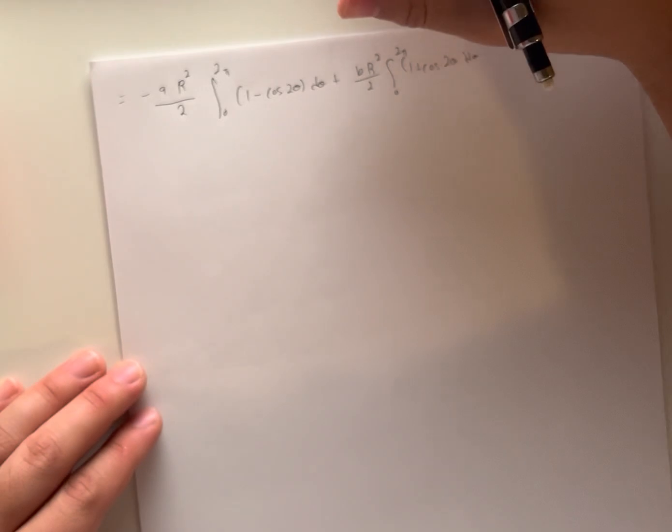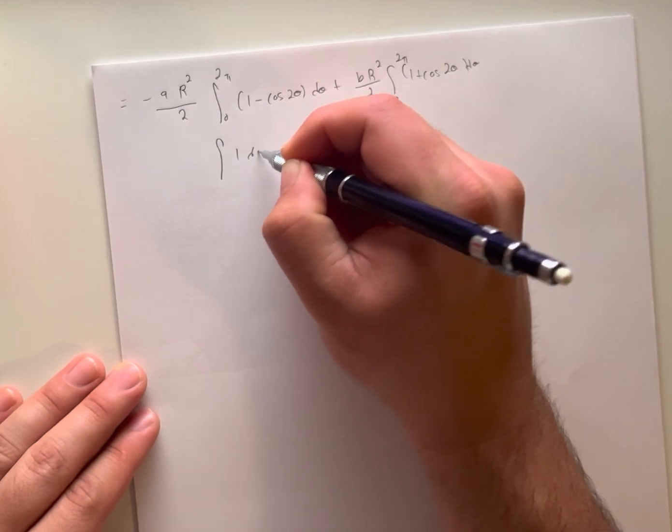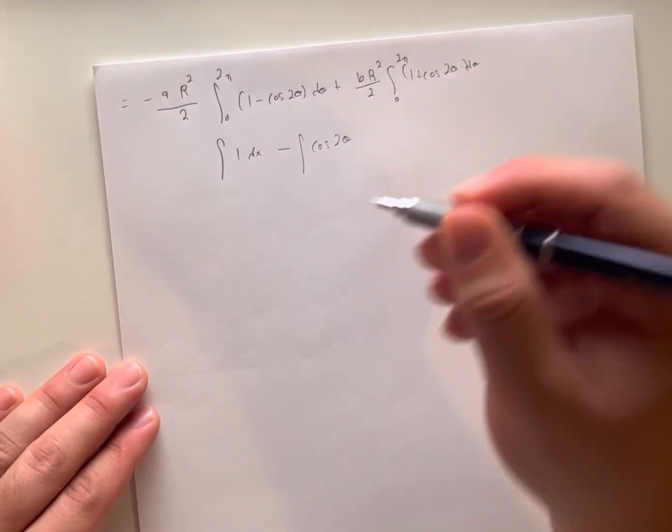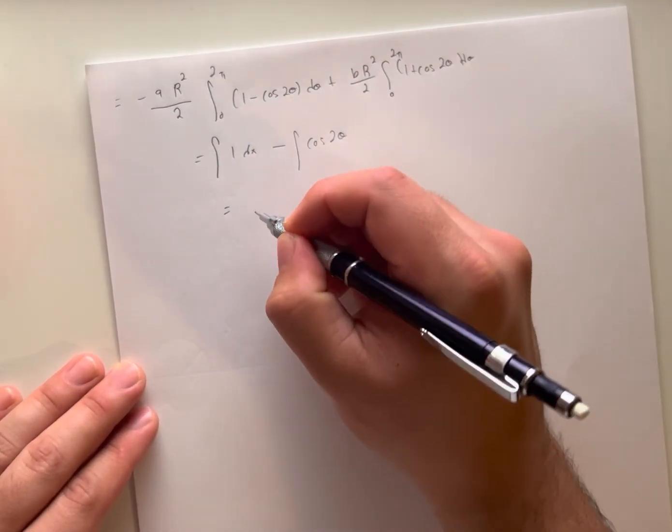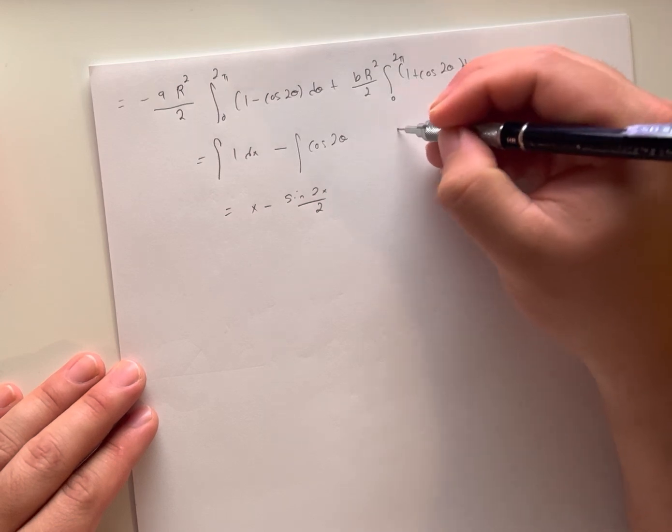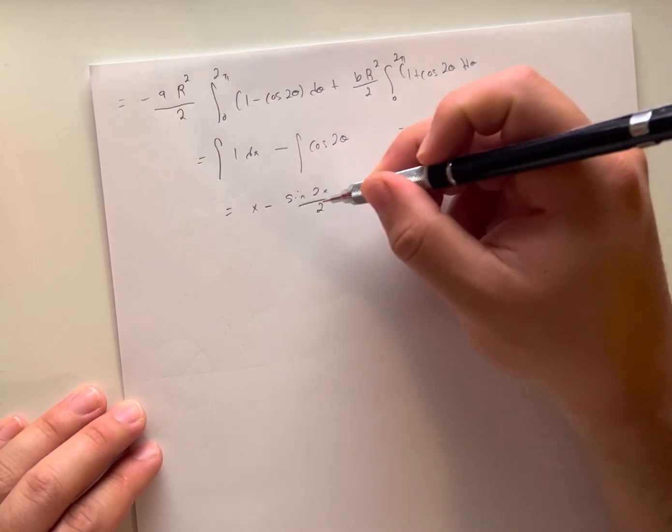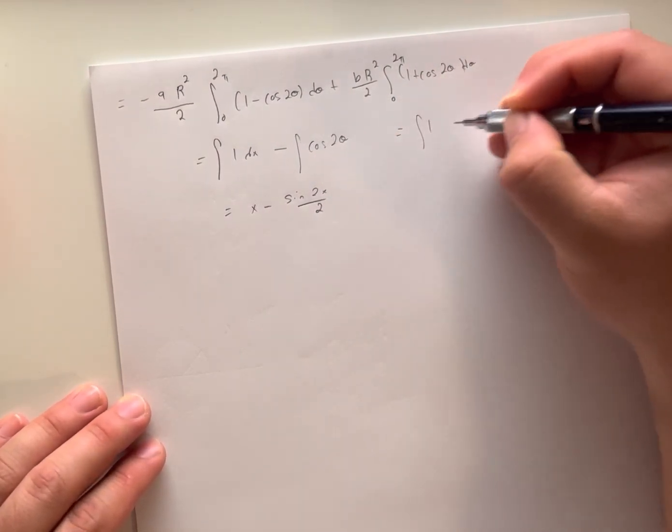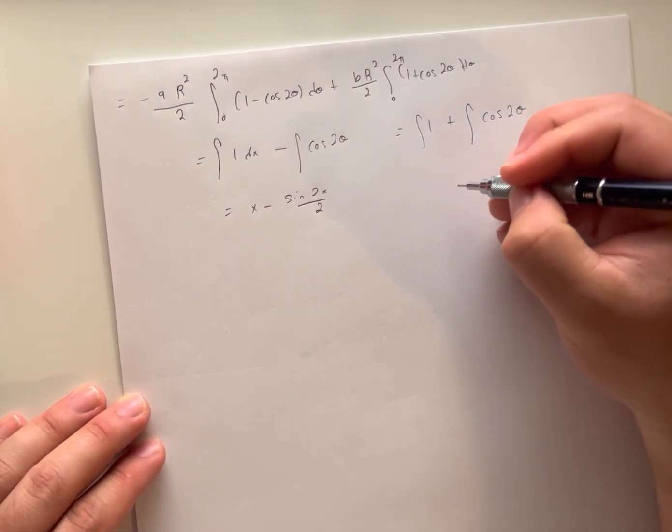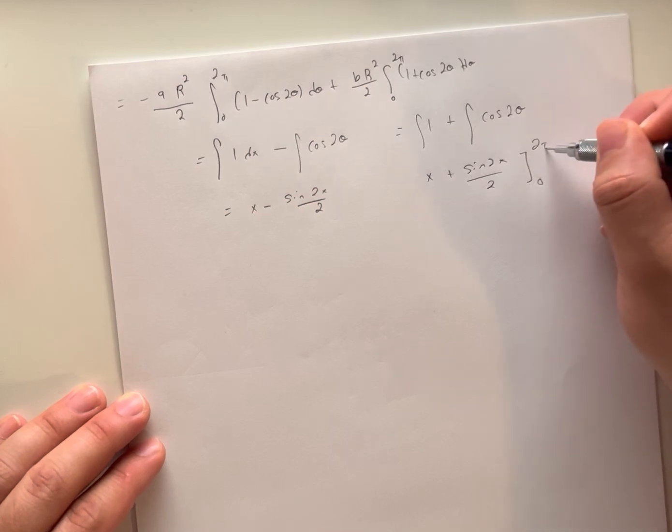Doing this integral on the left-hand side, we get: the integral of 1 minus cosine 2*theta becomes x minus sin(2*x)/2. For the right-hand side here, we get the same thing but instead of a minus it becomes a plus, so x plus sin(2*x)/2, and this is all evaluated from 0 to 2*pi.